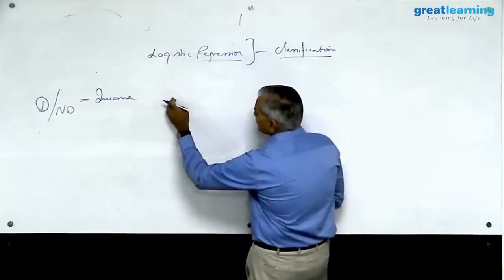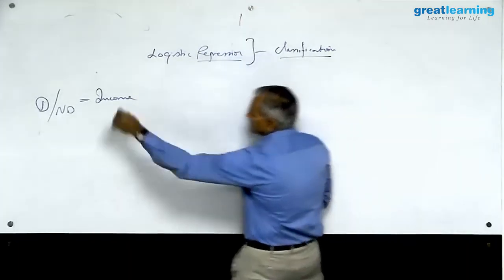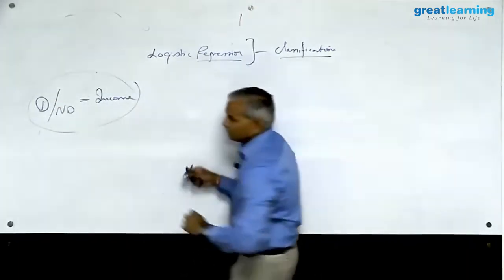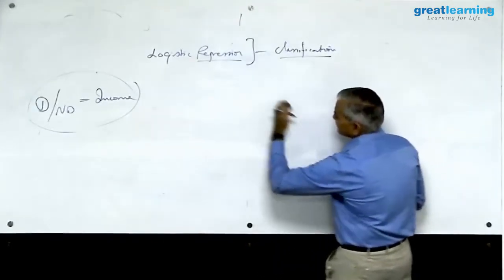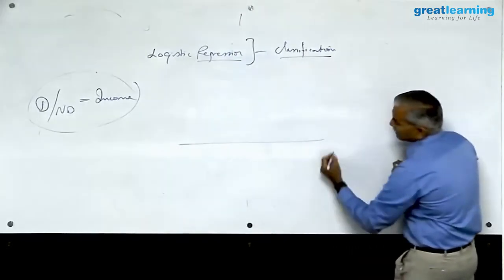Income, expenditure, and so on. Let us take one simple case of income. So of course it also depends on various other parameters, loan amount, loan duration, and so on.